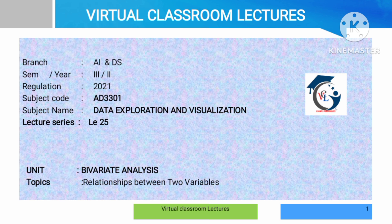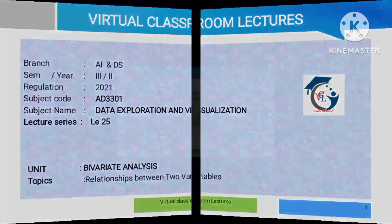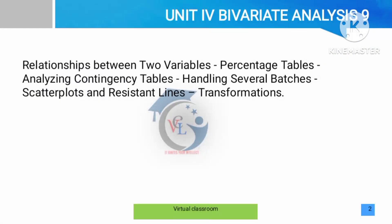This is the series of lectures for AD3301 Data Exploration and Visualization. Today we are going to see the fourth unit: bivariate analysis. Bivariate analysis means analyzing two variables and the relationship between the two variables to make some predictions.